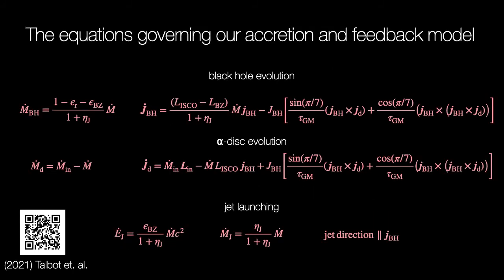Altogether this gives us a closed system of equations that specify the evolution of the black hole and subgrid disk as well as the launching of the jet. I'm aware that putting these equations up here without a full explanation isn't going to be particularly illustrative of the model, but if anyone is interested then please do see my recent paper or feel free to drop me an email, I'd be happy to discuss this.